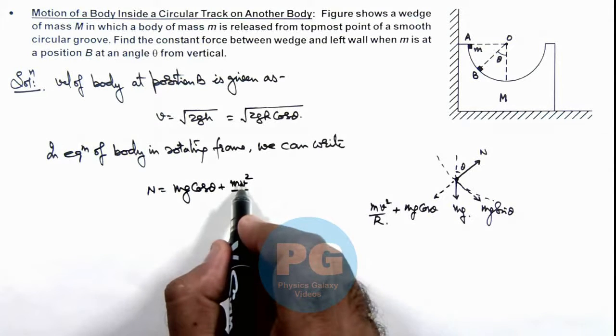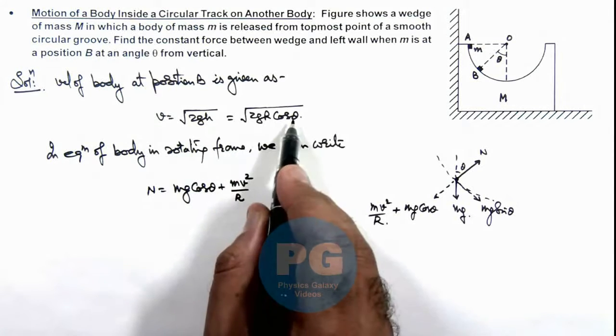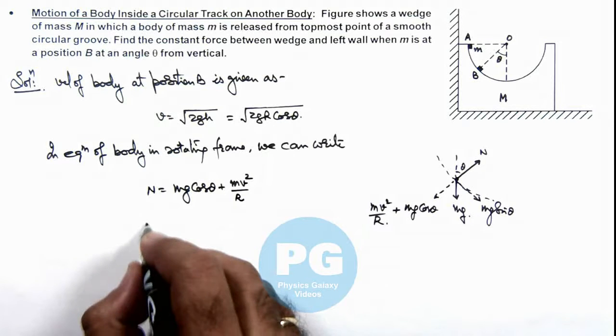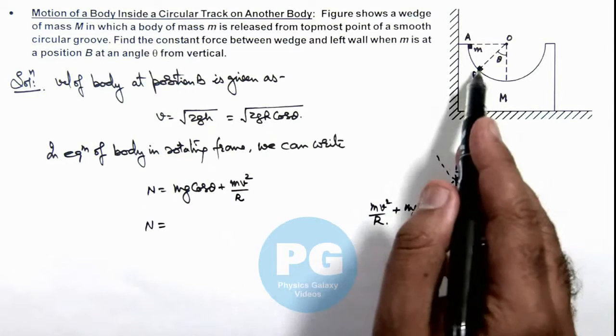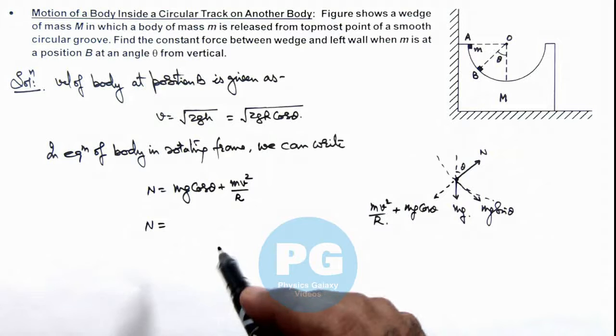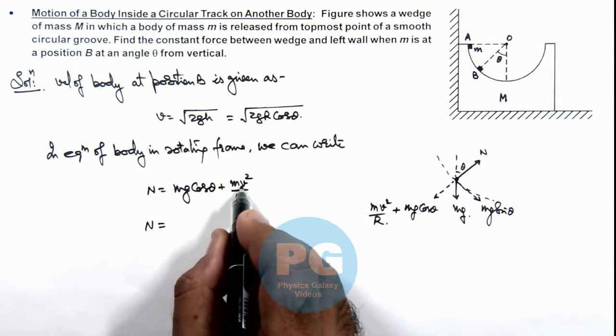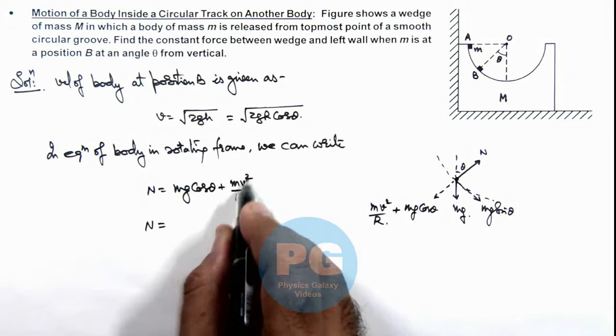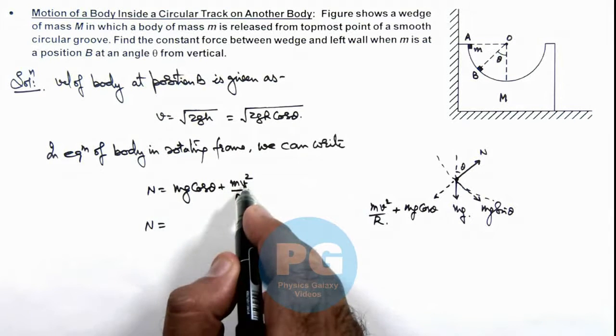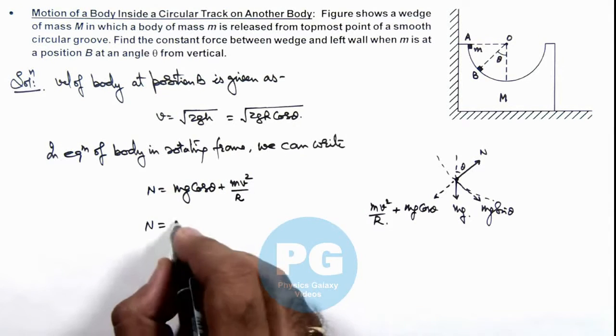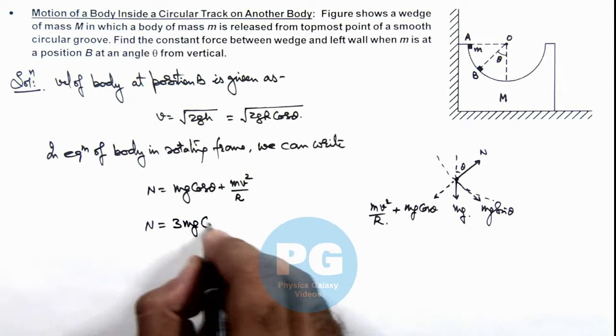If we substitute the value of v which is √(2gr cos theta), so this N which is acting on body due to the surface of groove will be given as mg cos theta plus when you put v² as 2gr cos theta this is 2mg cos theta, so this is 3mg cos theta.